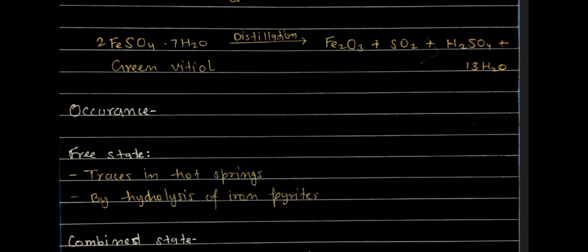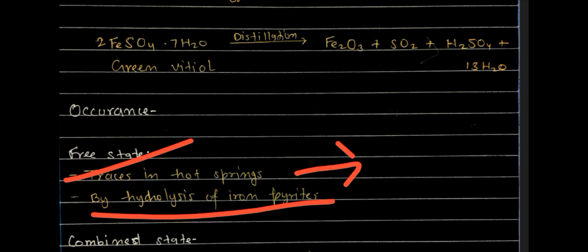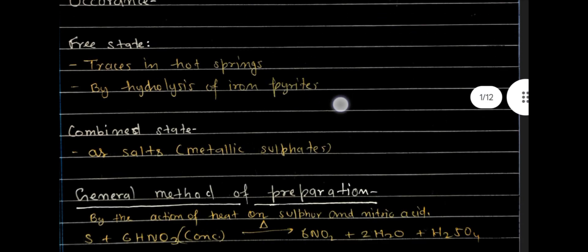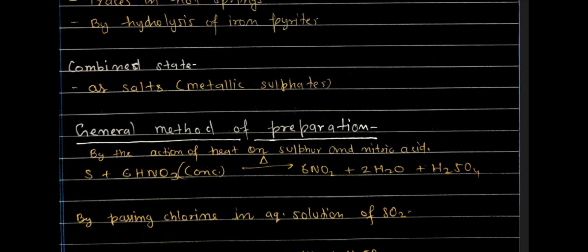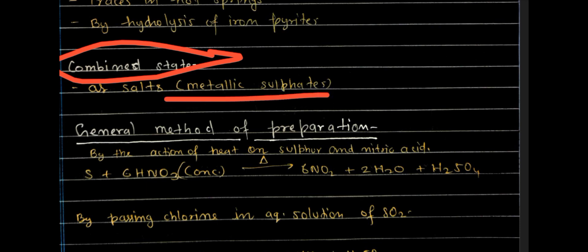If I talk about the occurrence of sulfuric acid in nature, it is found in hot springs in very small traces. Some amount is also produced during the hydrolysis of iron pyrite, which is an ore of iron, during the metallurgy of iron. In combined state, it is found as metallic sulfates such as sodium sulfate, iron sulfate, and potassium sulfate.